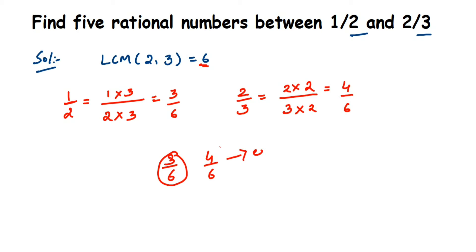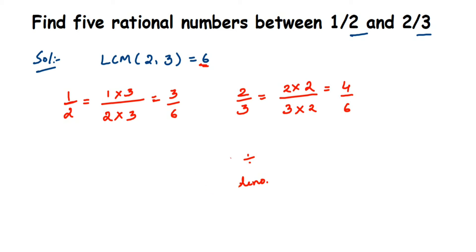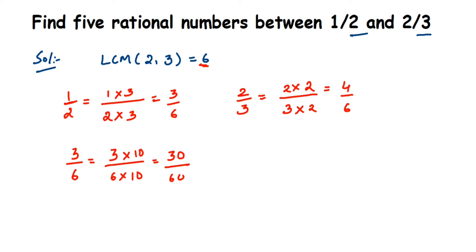We're going to find equivalent rational numbers of 3/6 and 4/6 by multiplying, since multiplying gives us more numbers. Division would require a common factor, so multiplication is the better approach. You can multiply by any number — it's not necessary to use a specific one. Since we need to find 5 rational numbers, I'll take a number greater than 5. I'll take 10, since it's easy to multiply with.